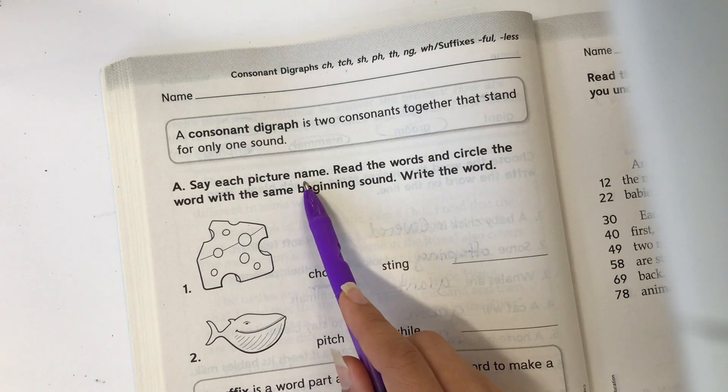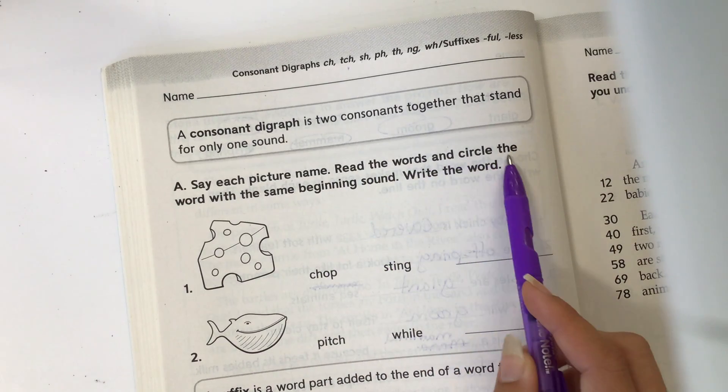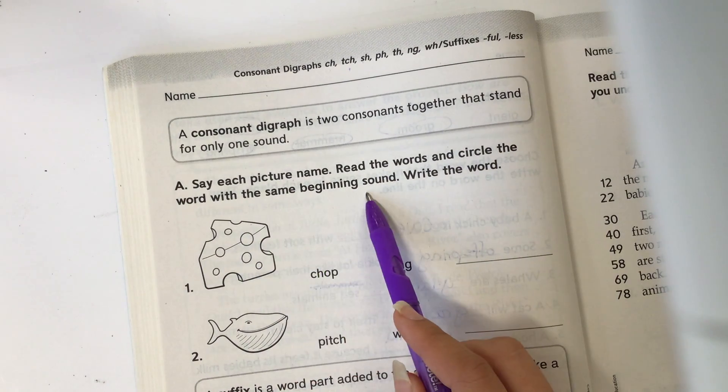Say each picture name. Read the words and circle the word with the same beginning sound. Write the word.